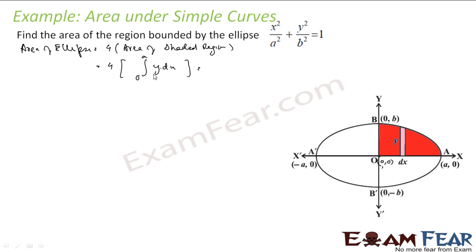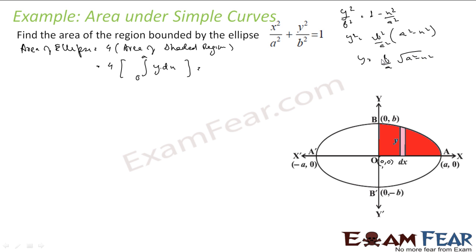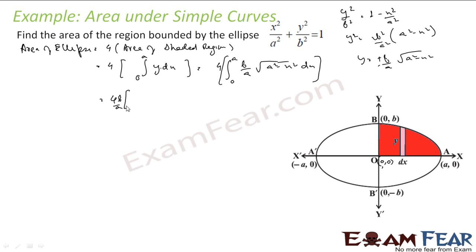I have to write y in terms of x. From the ellipse equation, y² / b² = 1 − x² / a², so y² = b² · (a² − x²) / a², and y = (b/a)√(a² − x²). So the expression becomes 4 × (b/a) · ∫₀ᵃ √(a² − x²) dx.